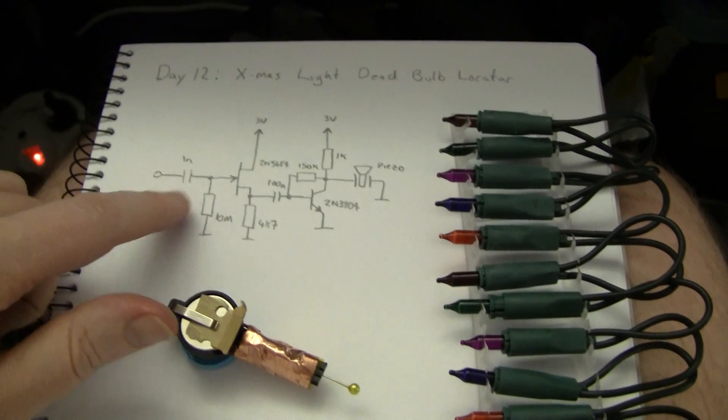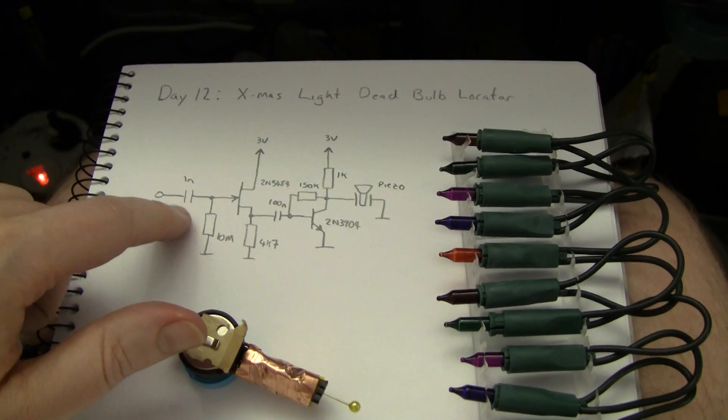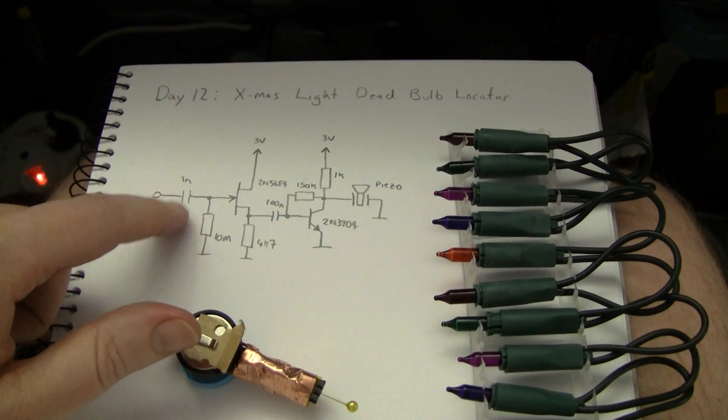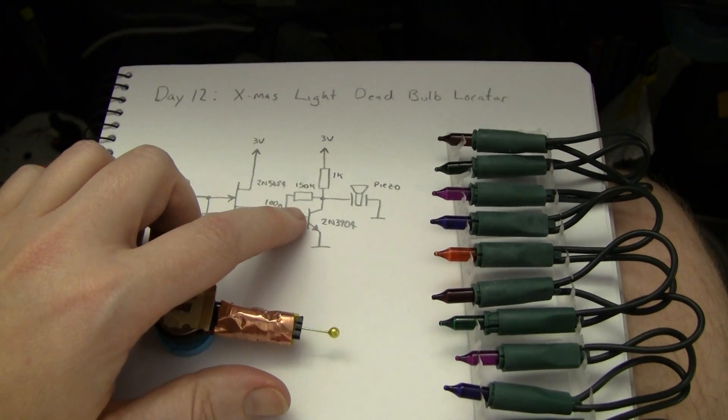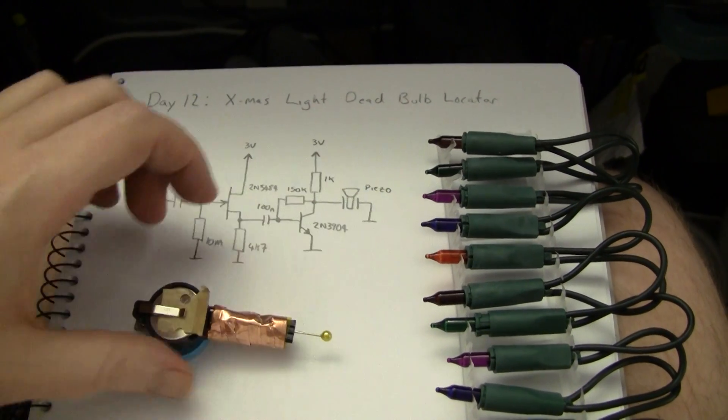So the circuit's quite simple. It's just a FET basically amplifying through a capacitor whatever it picks up from this probe here and drives a transistor which amplifies it a bit and that drives a piezo.